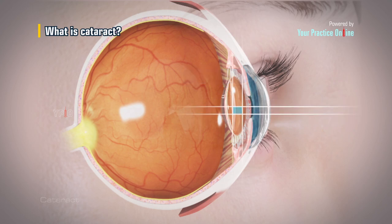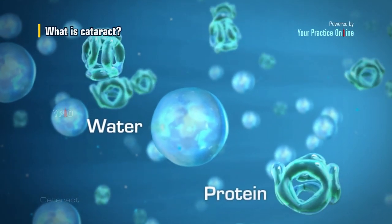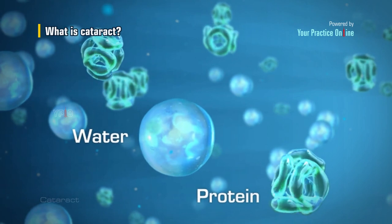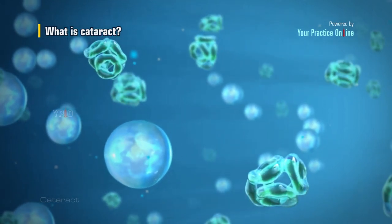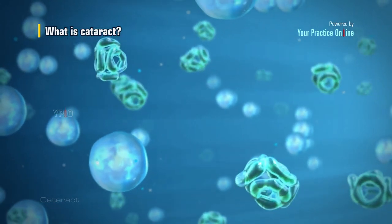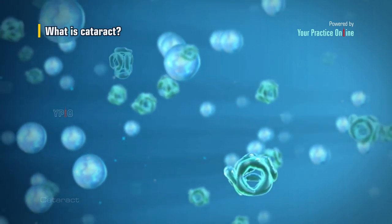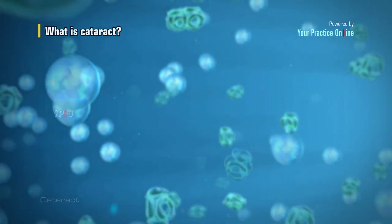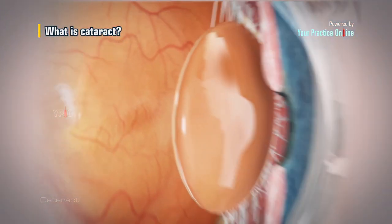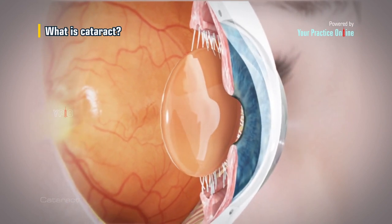The lens is made up of mostly water and proteins. These specific proteins provide its transparent structure. Any structural change in these proteins can alter the clarity of the lens and negatively impact vision.